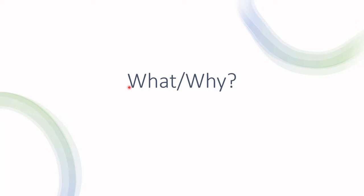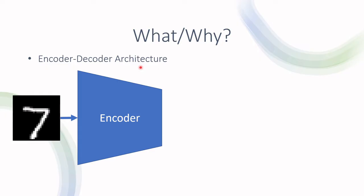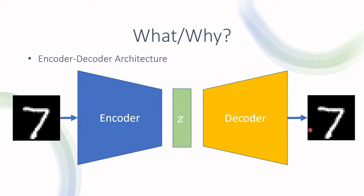Let's start with the what and why. In order to really understand what the trick is, we need to cover two different neural network architectures. The first one is an encoder-decoder architecture. What this model does is it receives some sample, say an image, as an input, and then the encoder part of the architecture compresses that image into some lower dimensional space, a latent space, usually denoted as z. Then the decoder reconstructs it back to the original form such that the reconstructed image will be as close as possible to the original image.